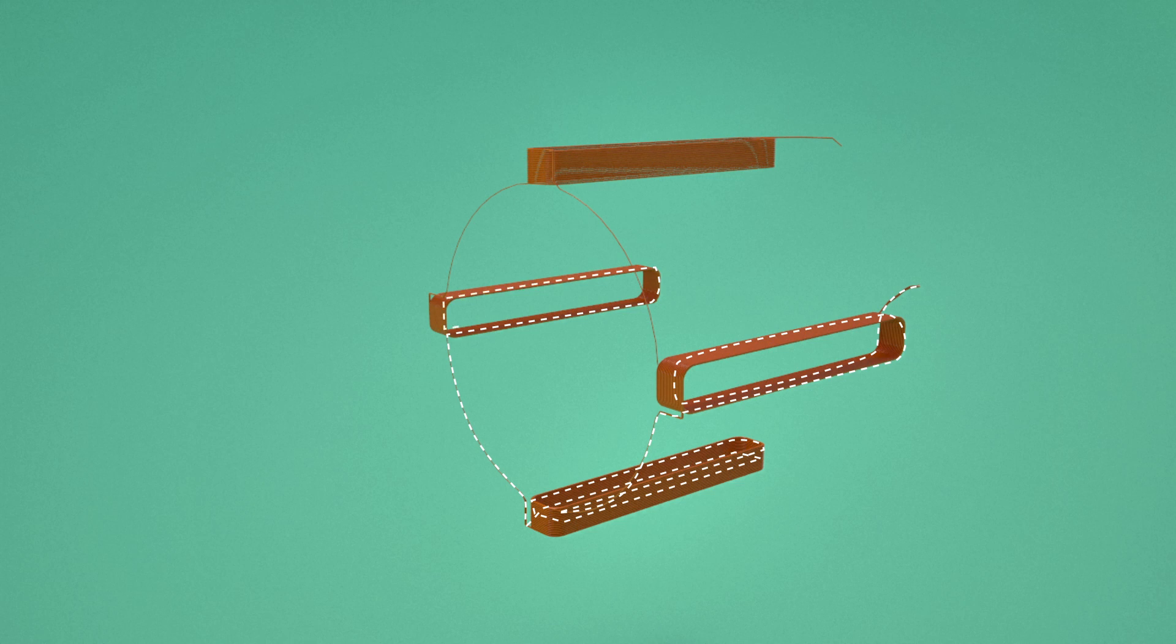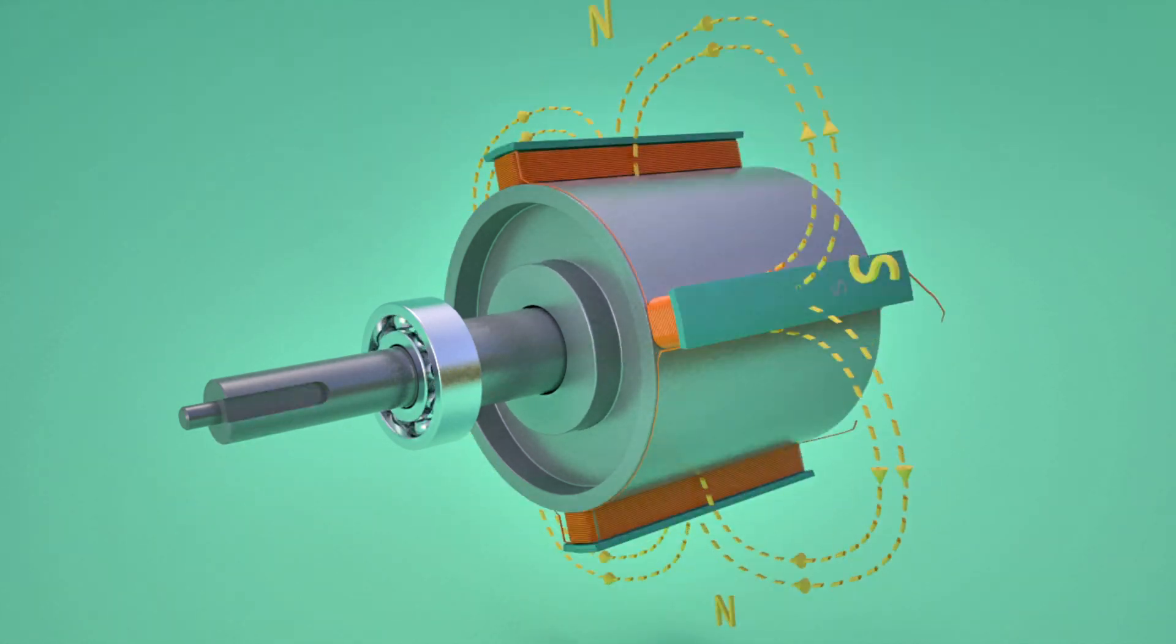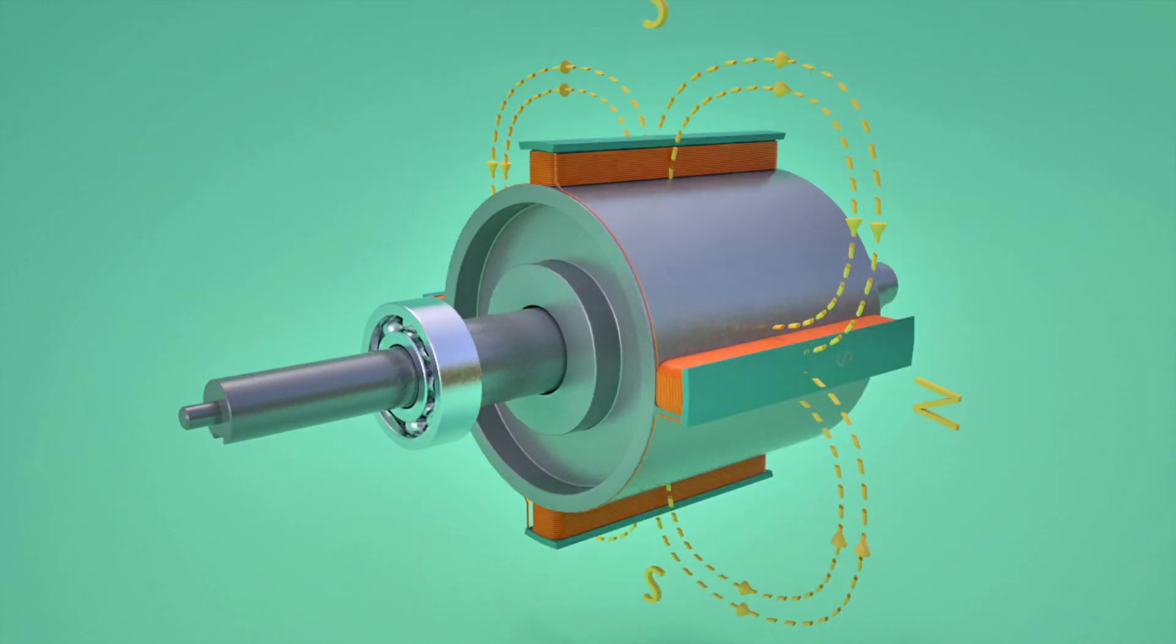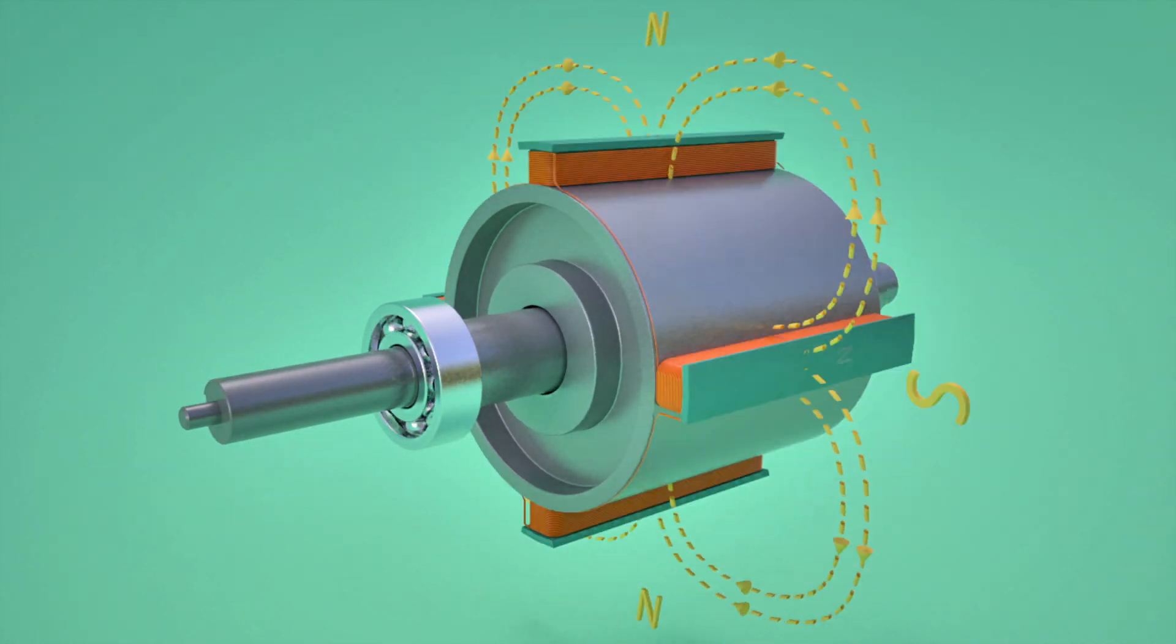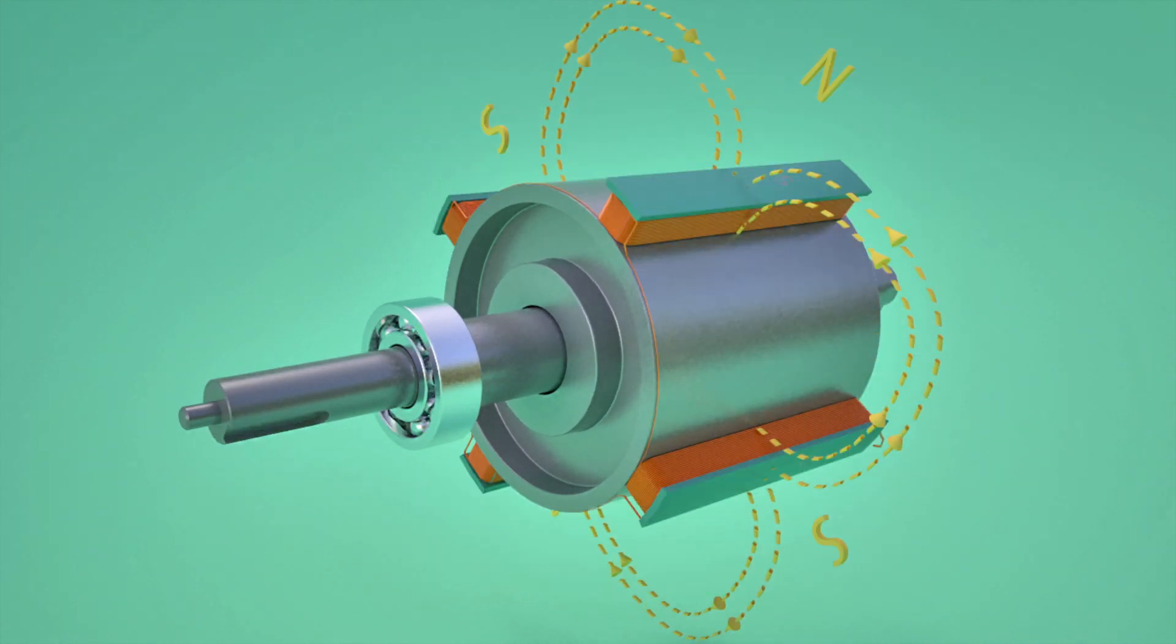Rotor coils are excited with a DC power source. The rotor is made to rotate by a prime mover, which makes the rotor flux also rotate along with it at the same speed.